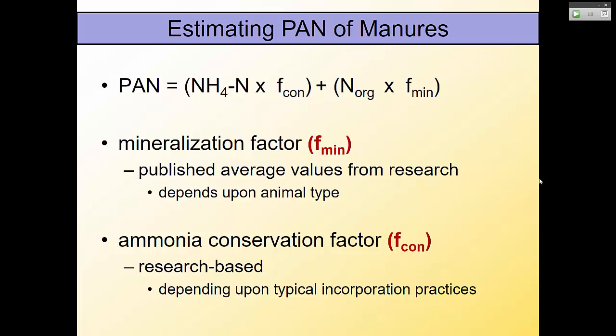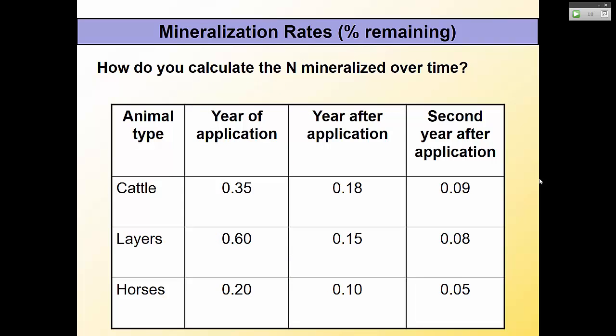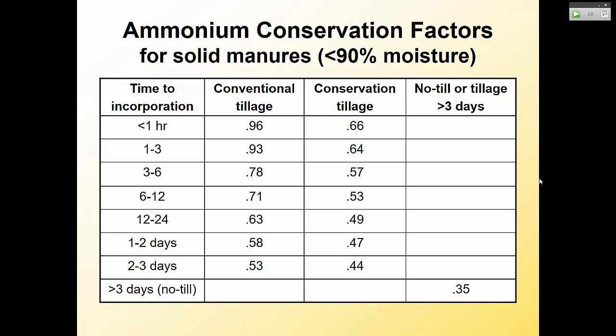If you incorporate manure within the first day using conventional tillage, you assume much more ammonium will remain for crop uptake — about 96%. If you wait greater than three days, only 35% of ammonium will remain. So when calculating PAN, there are two components: ammonium times the conservation factor, and organic N times the mineralization factor. Mineralization is the release of organic nitrogen; conservation is how much ammonium is retained based on tillage and incorporation timing.